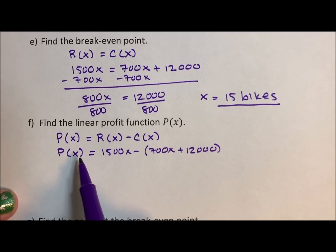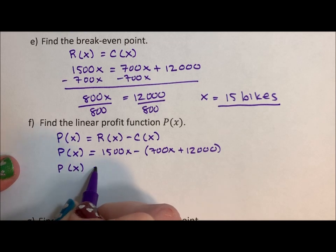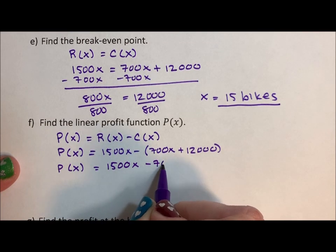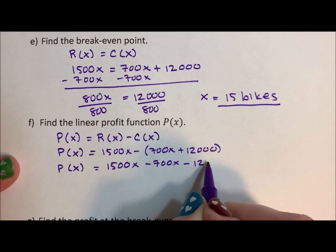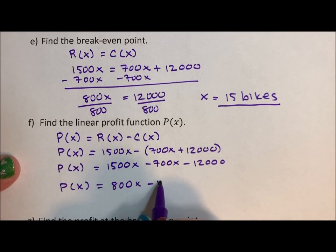But everything in cost has to work against profit. If it doesn't, then our profit is going to get all wrong. So we have to make sure that the revenue is positive. Everything in cost is negative. Cost works against profit. So profit is 800x minus 12,000. P(x) = 800x - 12000.